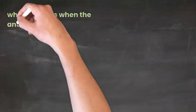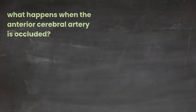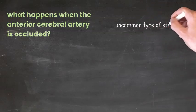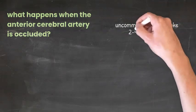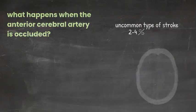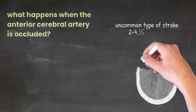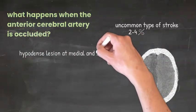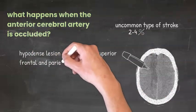So what happens when the anterior cerebral artery is occluded? It is an uncommon type of stroke that accounts for about 2 to 4 percent of ischemic strokes. Look at the CT scan which shows a hypodense lesion at the distribution of the anterior cerebral artery.